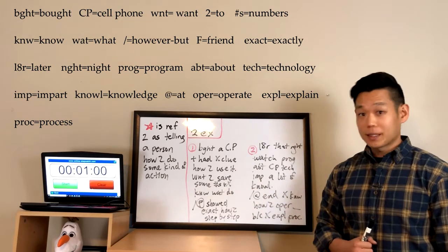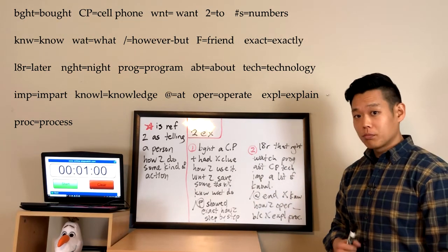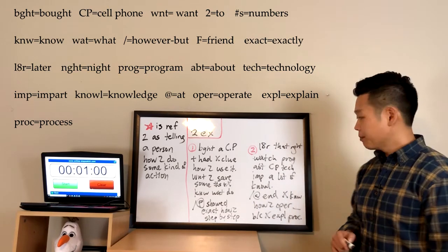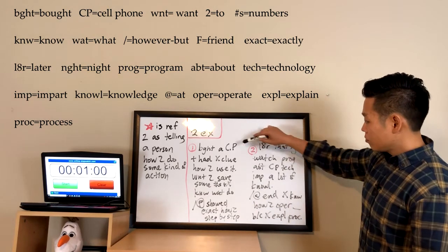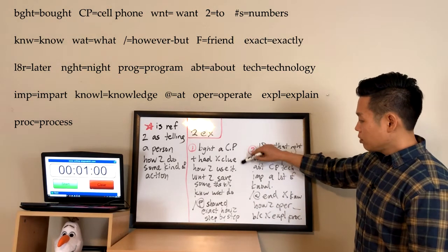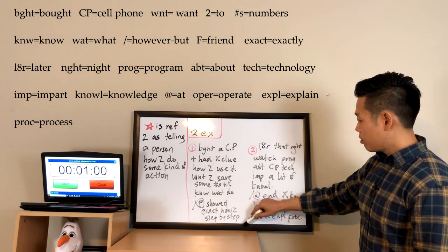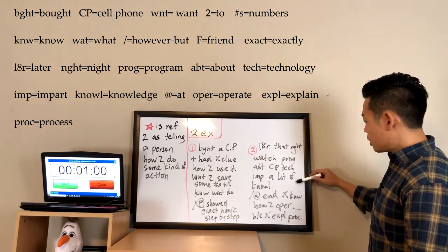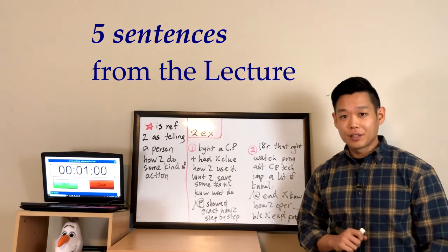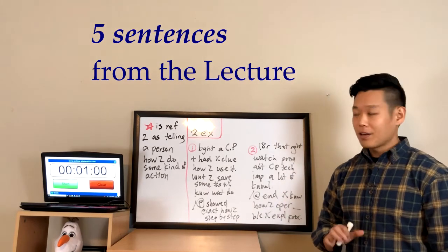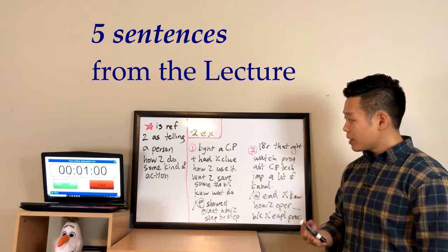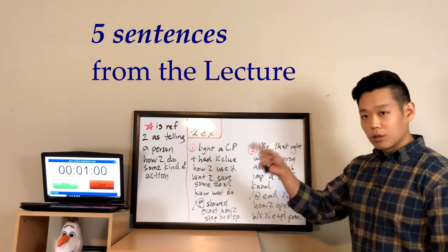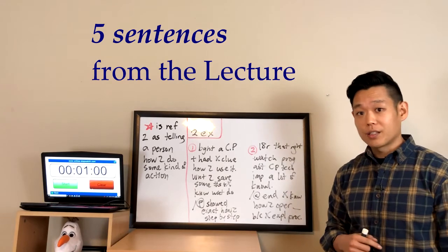Before listening to the sample response, let's count the number of sentences: one, two, three, four, five — about five or six sentences. Now let's listen to the sample response.